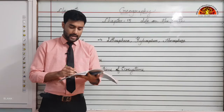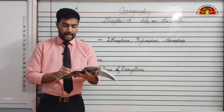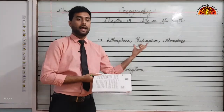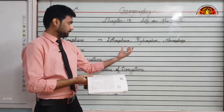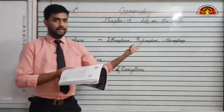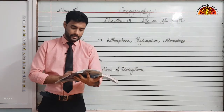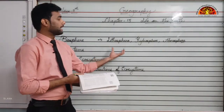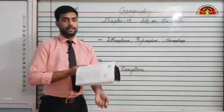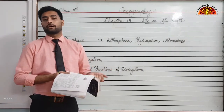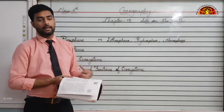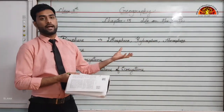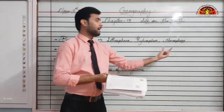Most of the organisms exist on the lithosphere or the hydrosphere, as well as in the atmosphere. There are also many organisms that move freely from one realm to another. For example, a crocodile can live both on land and water, birds can live on land and fly in the air, and a duck can walk, swim and fly.